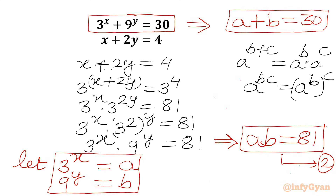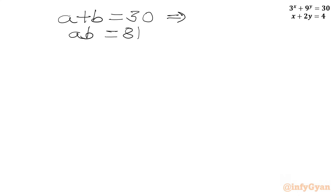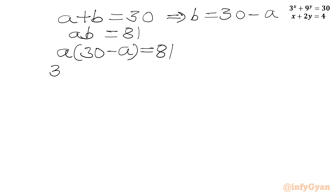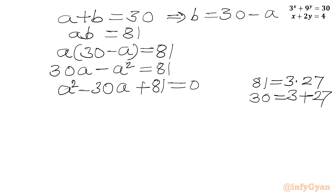Now we have to solve this system for the values of a and b: a + b = 30 and a·b = 81. From the first equation, b = 30 − a, so a(30 − a) = 81, which gives 30a − a² = 81. Taking all terms to the right-hand side: a² − 30a + 81 = 0. We can factor 81 as 3 × 27, and split 30 as 3 + 27, giving a² − 3a − 27a + 81 = 0.